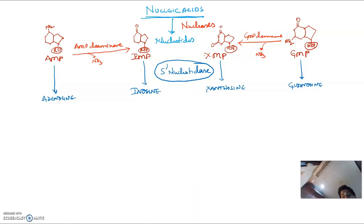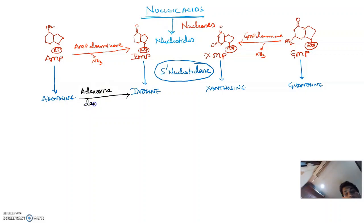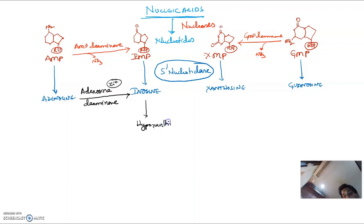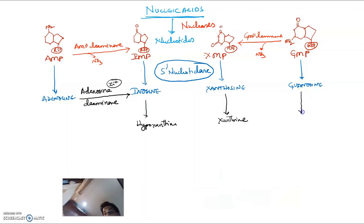In the next step, these nucleosides have to get converted to their respective nitrogen bases. Adenosine cannot get converted directly — it undergoes a deamination reaction first, in the presence of adenosine deaminase, which is a zinc-containing enzyme. Adenosine gets converted to inosine, and this inosine gets converted to hypoxanthine. Xanthosine gets converted to xanthine. Guanosine gets converted to guanine in the presence of purine nucleoside phosphorylase.